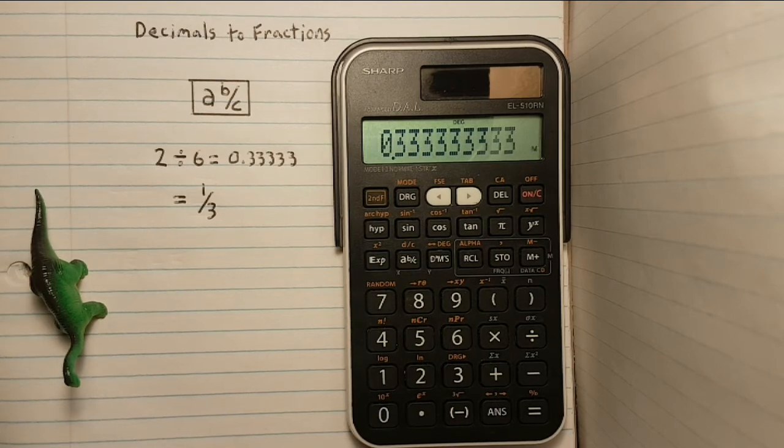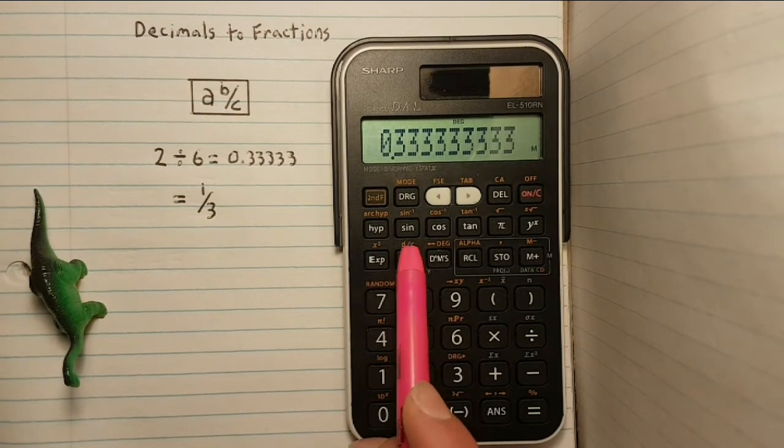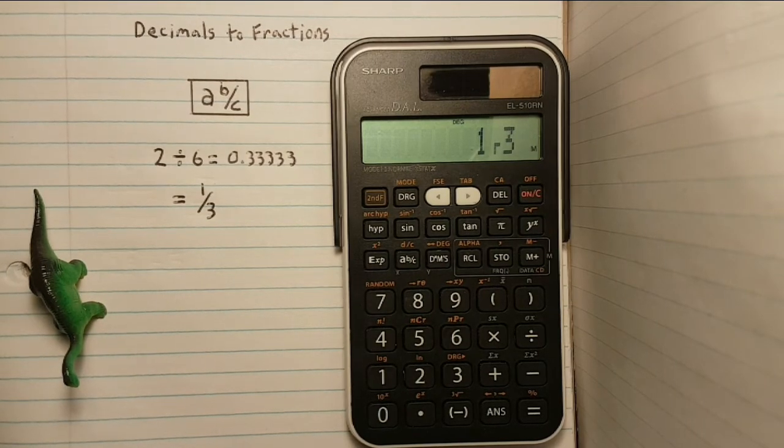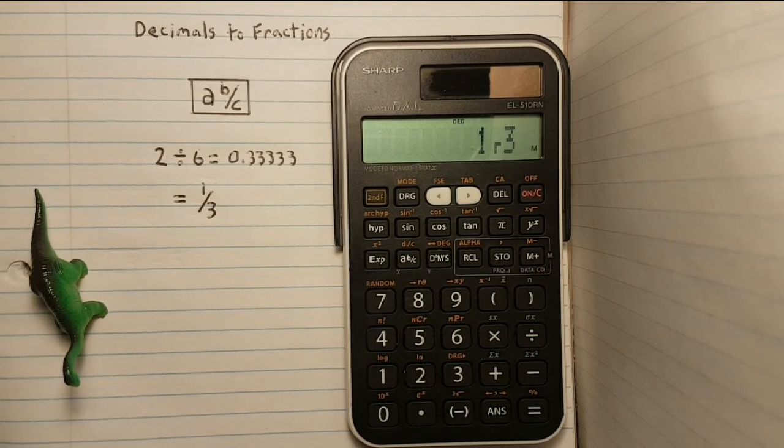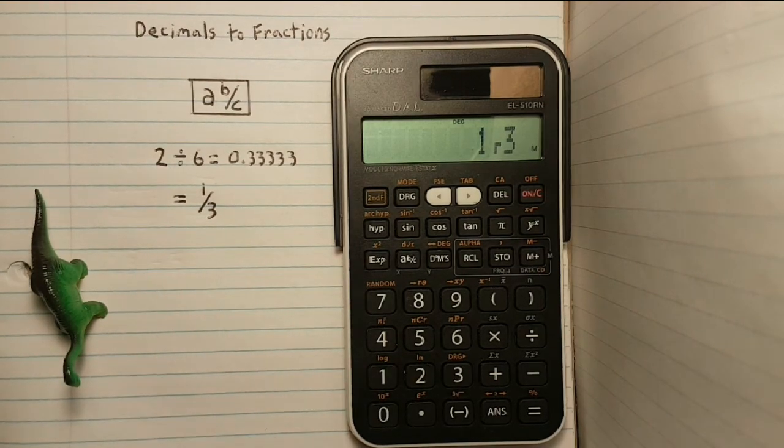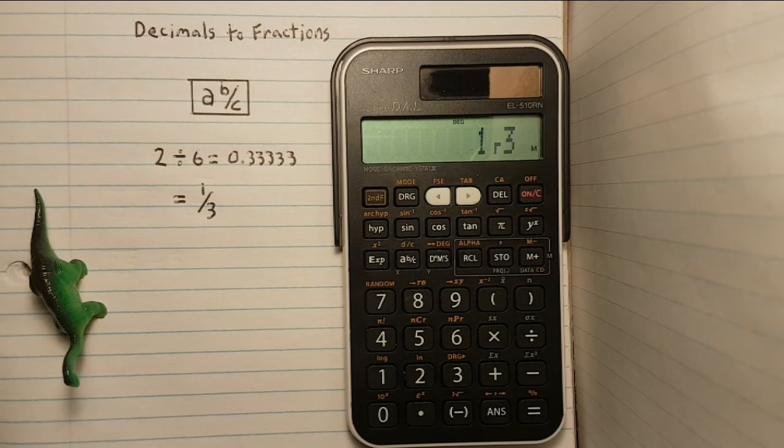To simplify we press the A B over C button and this changes our result to the simplified fraction of 1 over 3 or 1 third which is much easier to write out. I hope this helps and good luck on those tests.